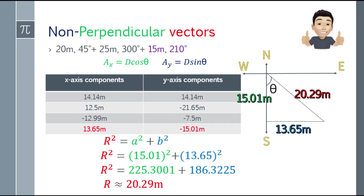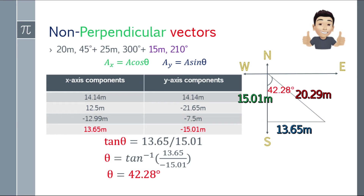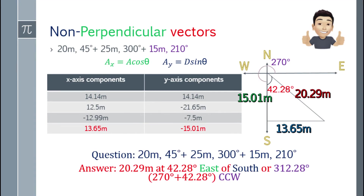Let's construct the triangle and apply the Pythagorean theorem. R² = 15.01² + 13.65², and the resultant will be 20.29. For the angle: tangent theta = 13.65 over 15.01, so arc tan of that gives 42.28 degrees. So the answer for 20 meters at 45°, plus 25 meters at 300°, plus 15 meters at 210° will be 20.29 meters at 42.28 degrees east of south, or 312.28 degrees CCW.